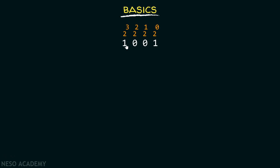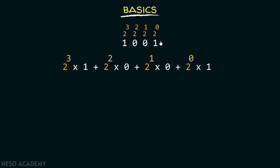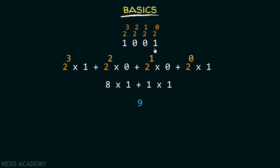The next step is to multiply each bit by its corresponding weight: 2 raised to the power 3 by 1, 2 raised to the power 2 by 0, 2 raised to the power 1 by 0, and 2 raised to the power 0 by 1. Then we add them together. Since 0 multiplied with anything is 0, the final result is 8 into 1 plus 1 into 1, because 2 raised to the power 3 is 8 and 2 raised to the power 0 is 1. So 8 plus 1 equals 9, which is the decimal equivalent of this binary number.